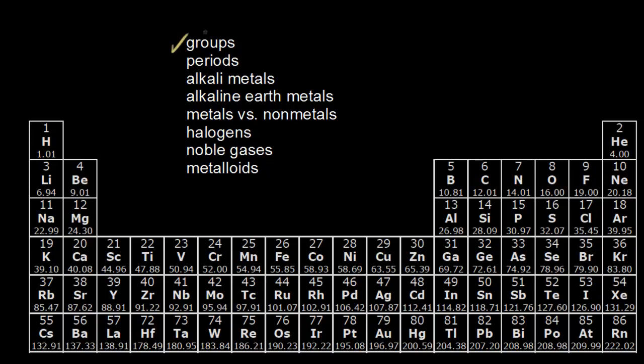So the groups are the vertical columns on the periodic table. And so if I go over here, I can see that all of these elements are in the same vertical column. So all of these elements are in the same group. And we call this group one. I can see that all of these elements are also in the same column. So all these elements are in the same group, and we call this group two.